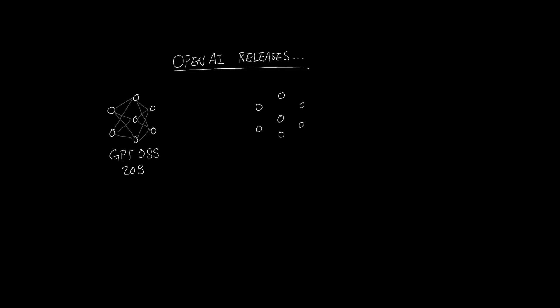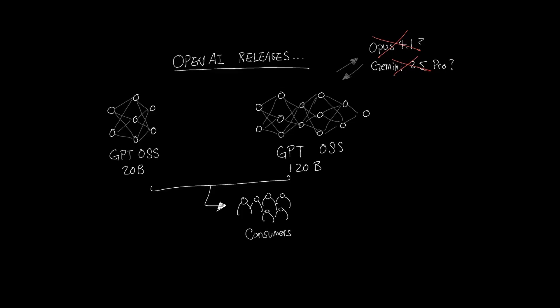When we are talking about the GPT OSS release that was made by OpenAI, we're not comparing it to models like Opus 4.1 or Gemini 2.5 Pro. What we're really talking about is what this means to consumers like you and me, especially for the OSS 20 billion model.